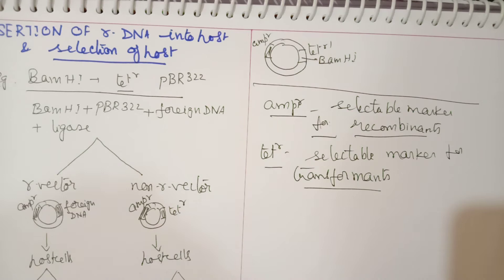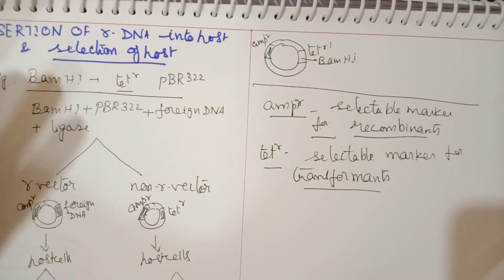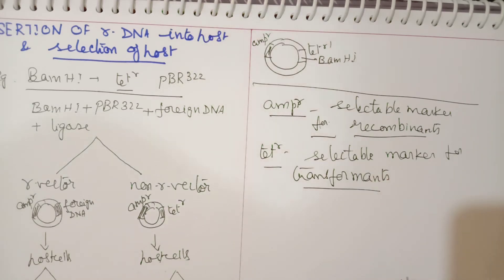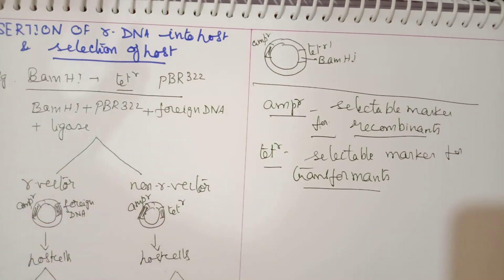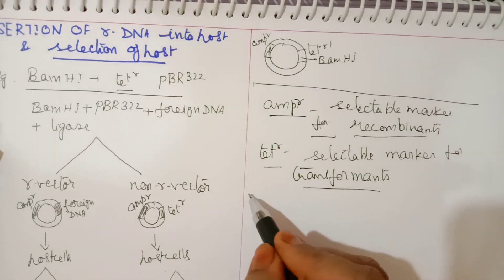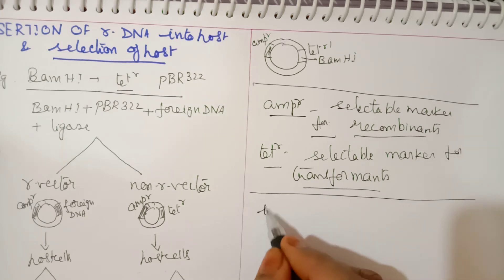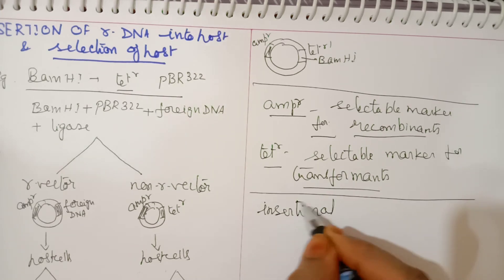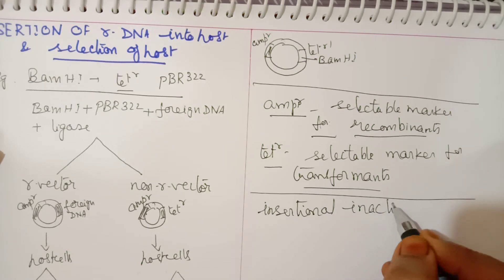If tetracycline resistance is present, that means transformation has occurred. If they are surviving only in ampicillin, that means they are recombinant. In this way we can separate recombinant cells and transformed host cells. However, this method of selecting host cells using antibiotic resistant genes is a very cumbersome and tedious process. Therefore, another method is used for selection of host cells, called insertional inactivation.